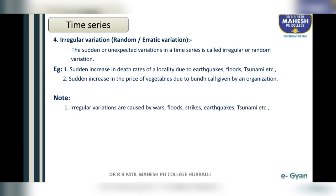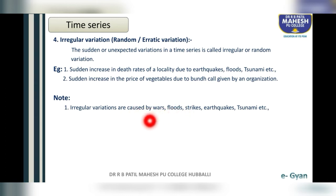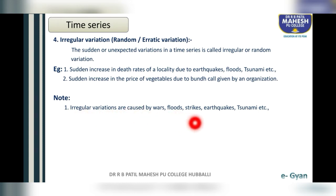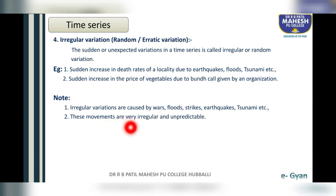Important note: irregular variations are caused by wars, floods, strikes, earthquakes, and tsunami. This is very important and can be asked many times — what are the causes for irregular variations? The causes are wars, floods, strikes, earthquakes, tsunami, etc. Also note that these movements are very irregular and unpredictable.